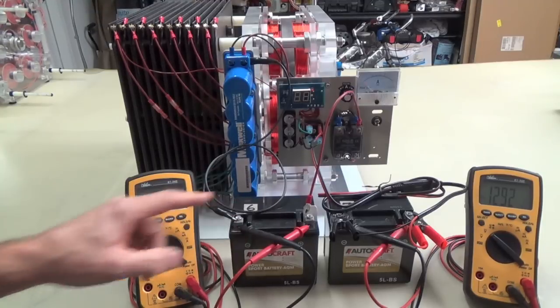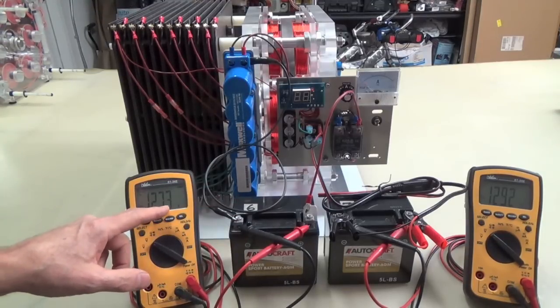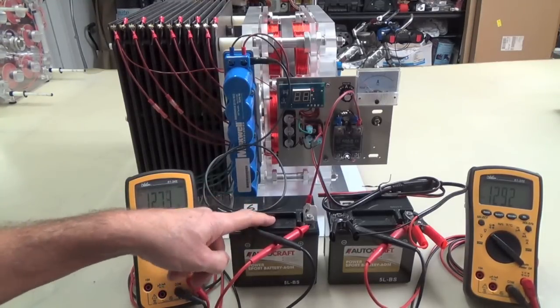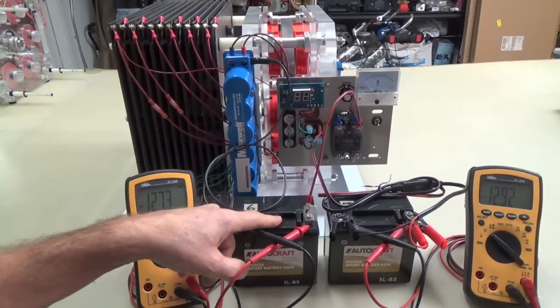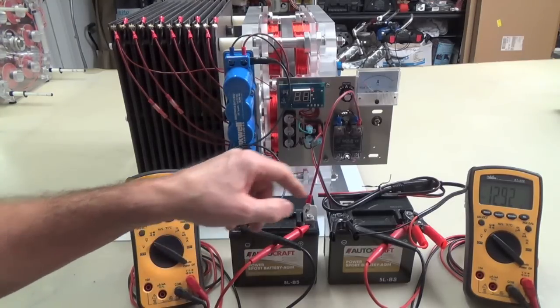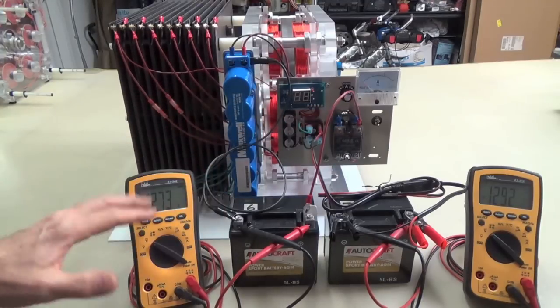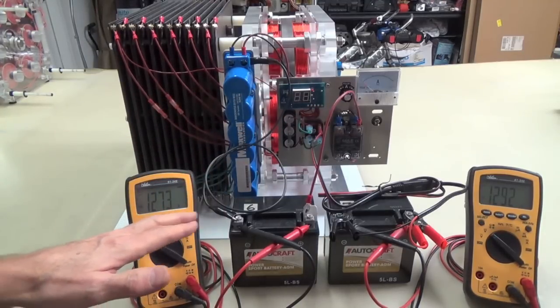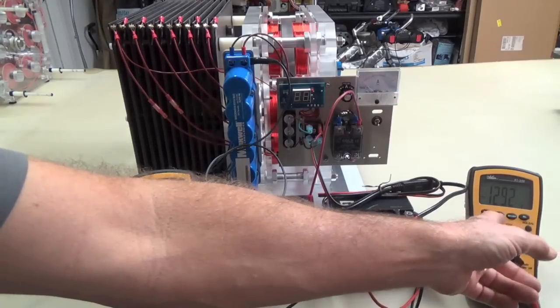This battery here shows on the meter it's 12.73. These batteries like to be about, they like to rest at over 13 volts. Usually 13.1, 13.2 is what these batteries are. So that's actually lower than a good full charge.